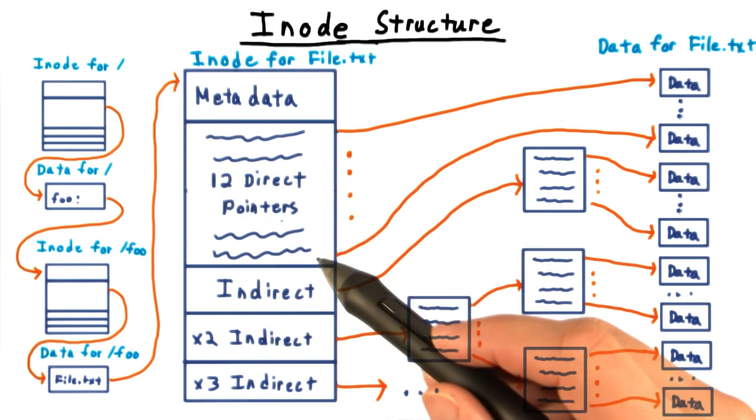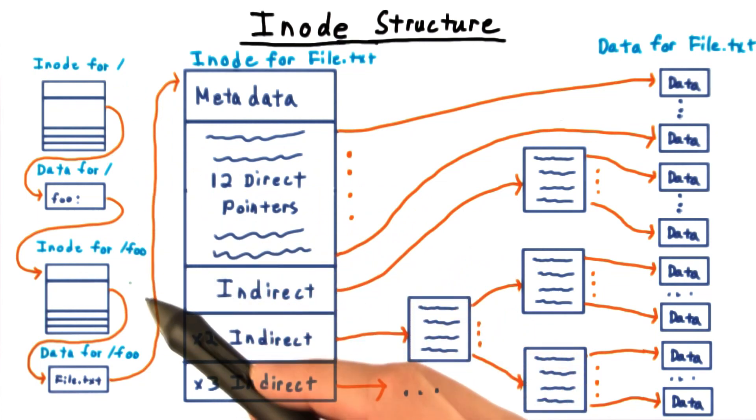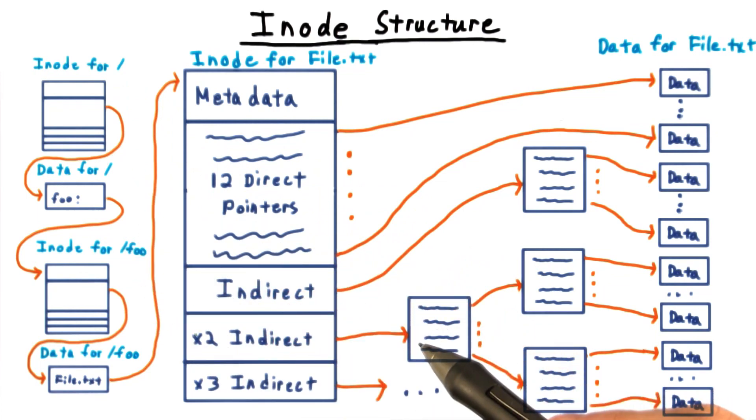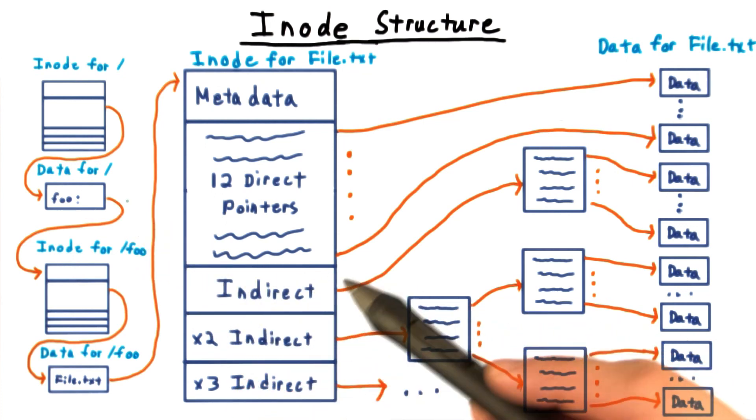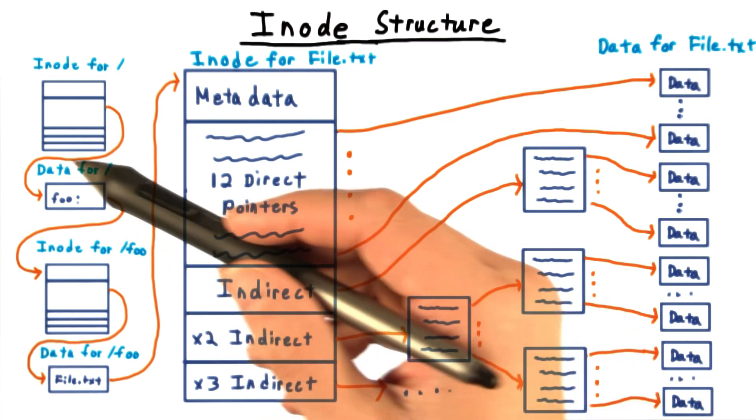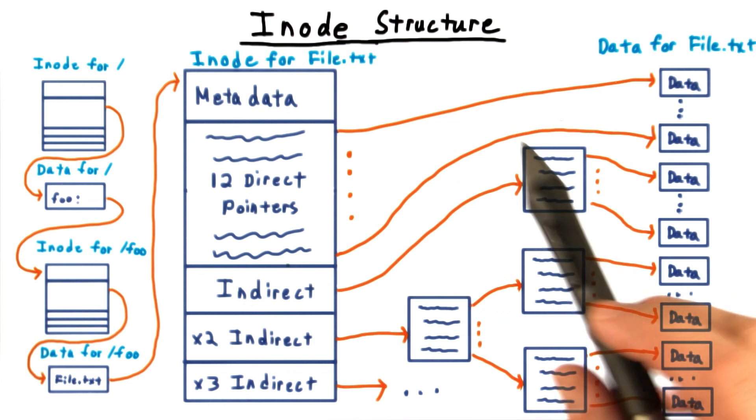As for access time, it is true that the inodes add an extra layer of indirection as we go through the directory tree. A directory points to the inode for a file rather than to the first data block. Because inodes are cached in memory, however, this performance cost is minimal.